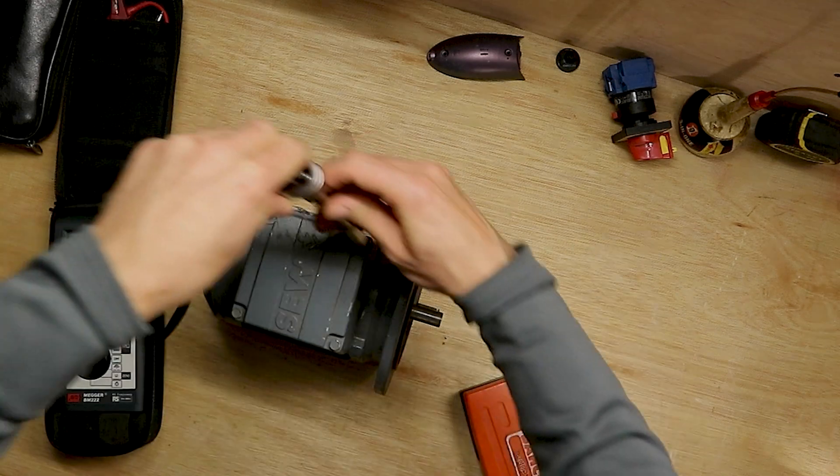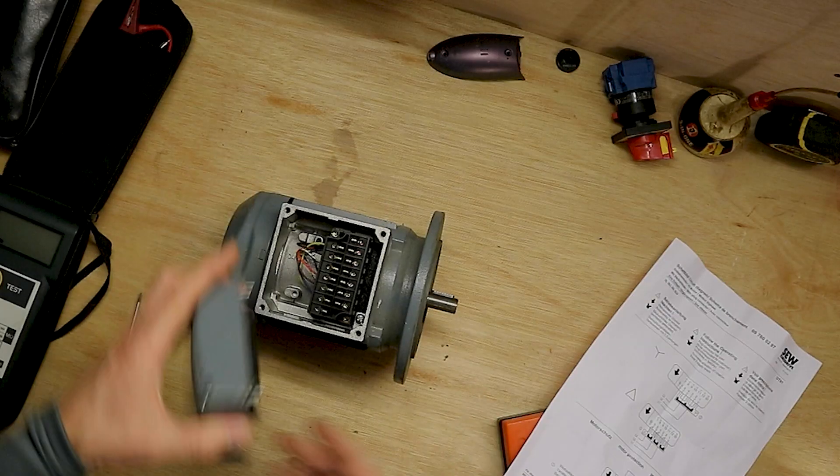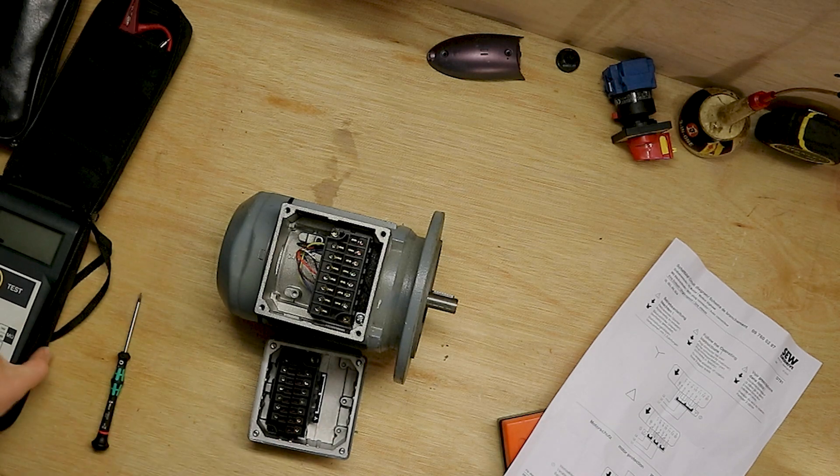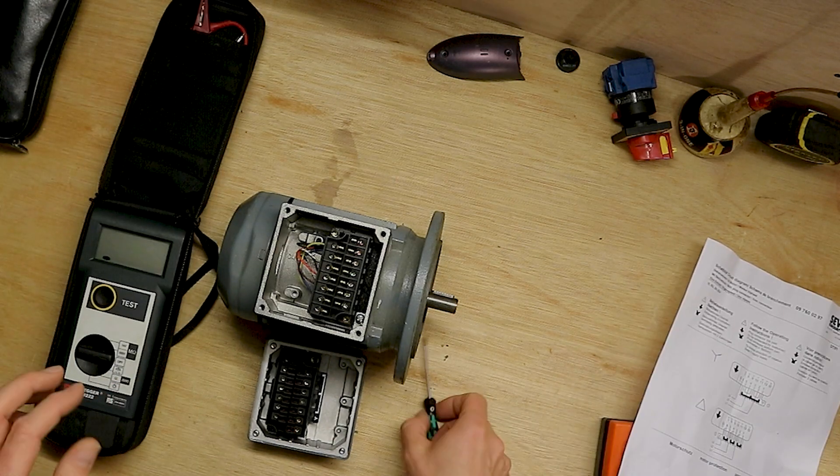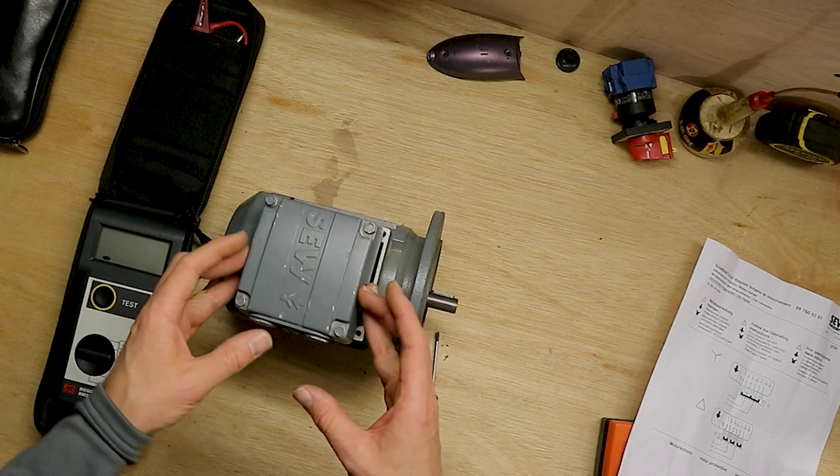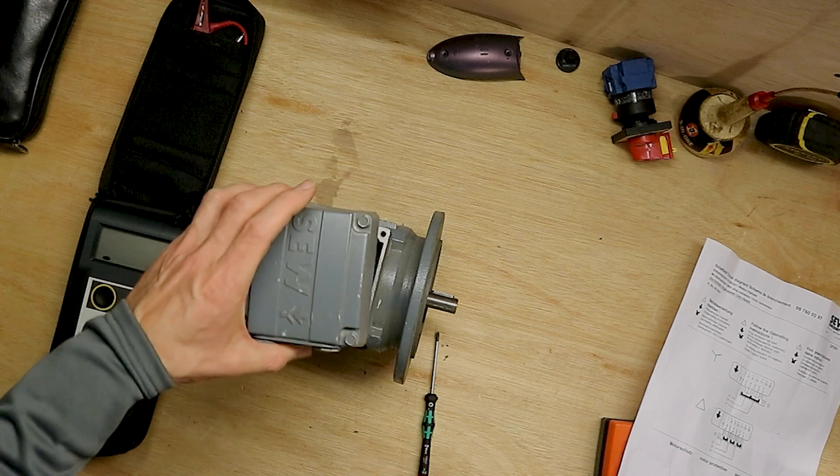So next, get the cover off. So now we've got this off. What we're going to want to do to test motor is, as explained, you're going to want to make sure that when you're doing this, before you take this cover off, that you've checked that your circuit is dead.